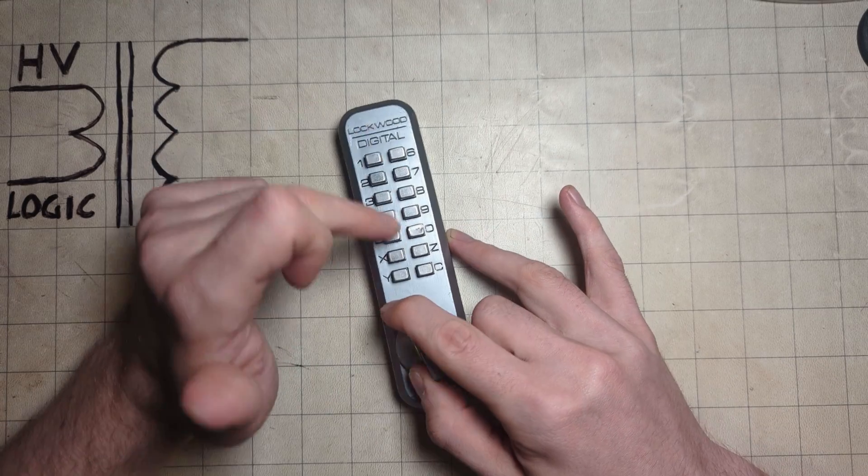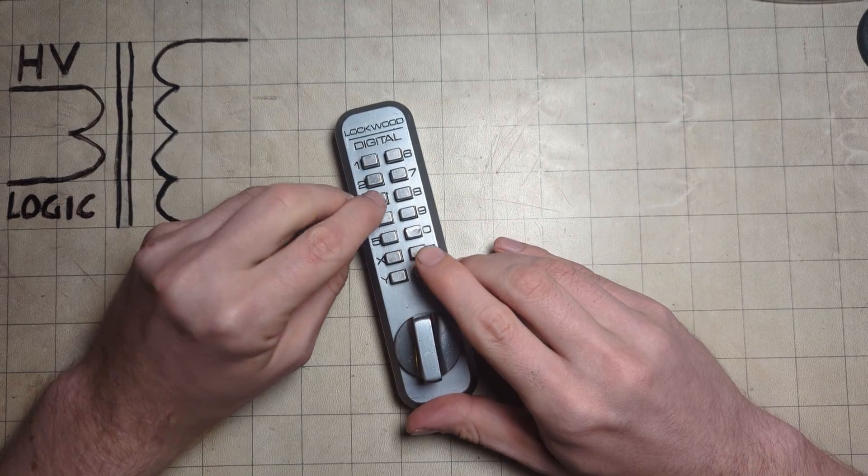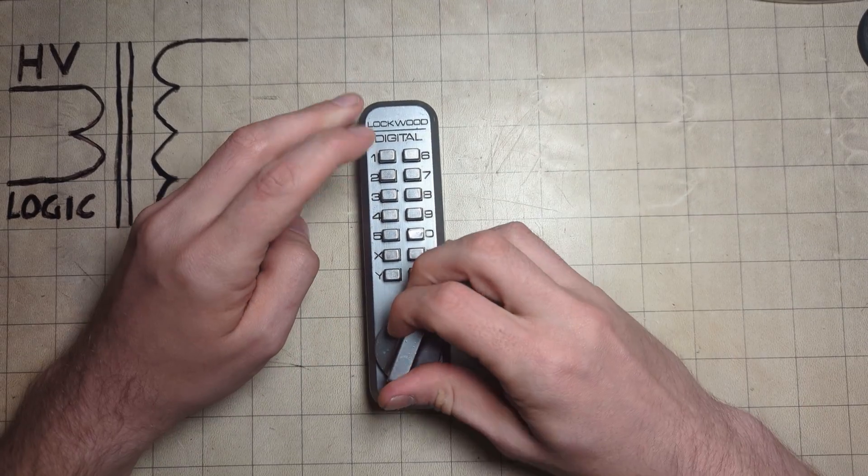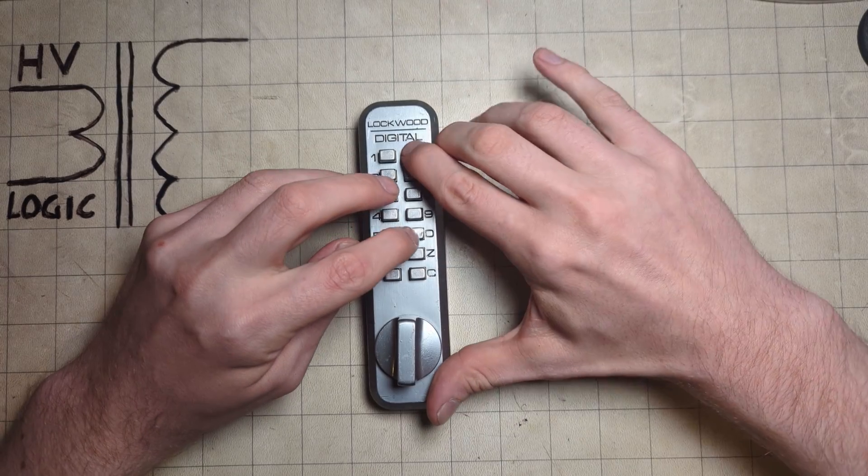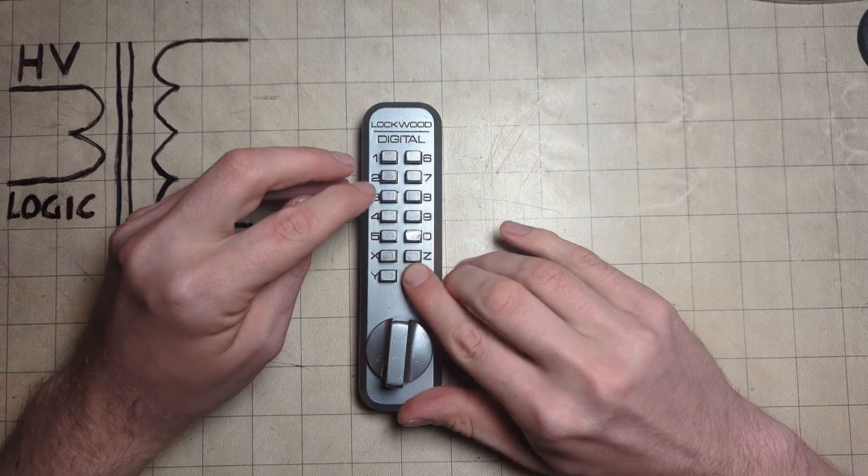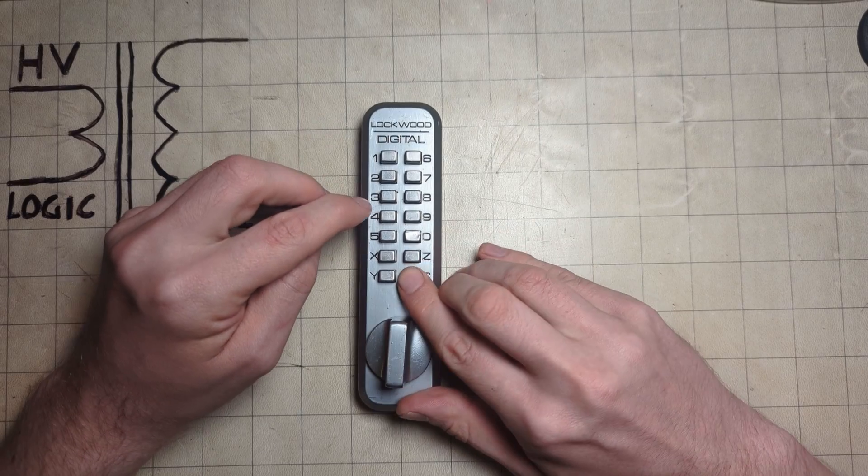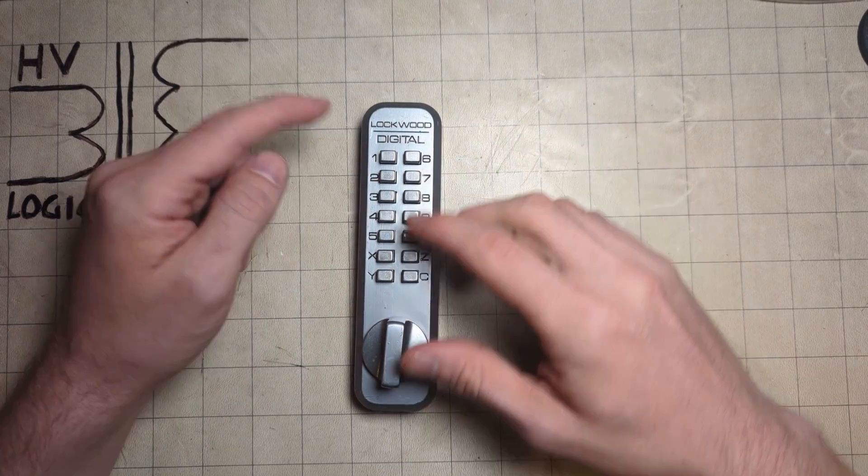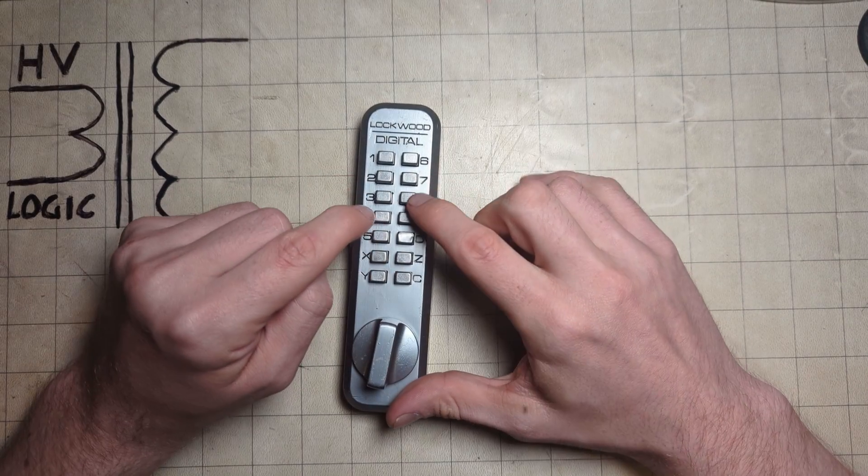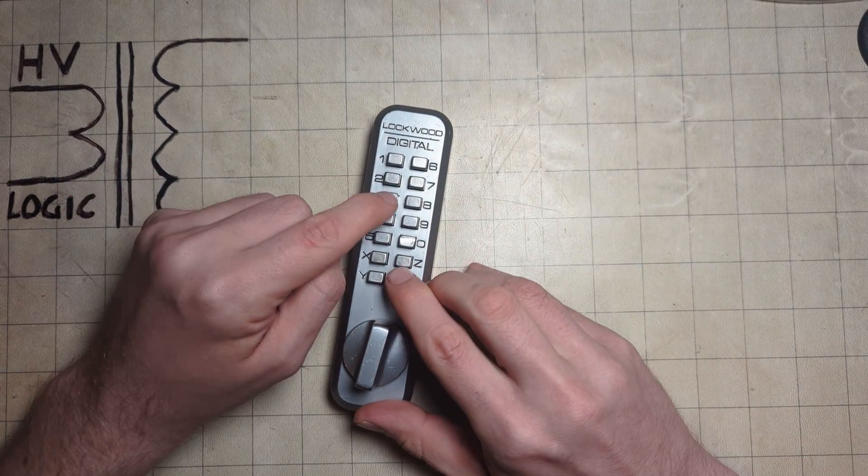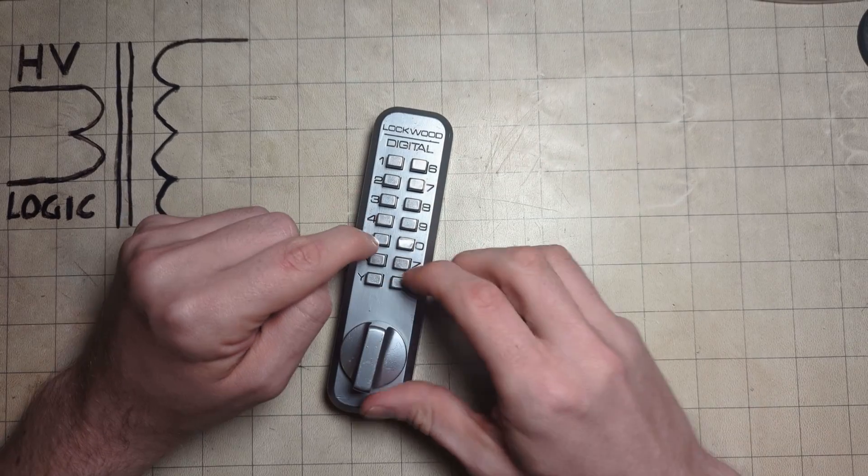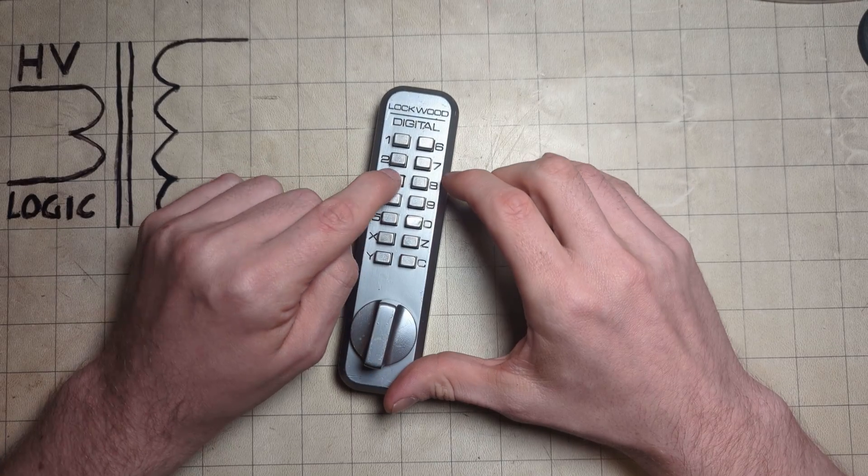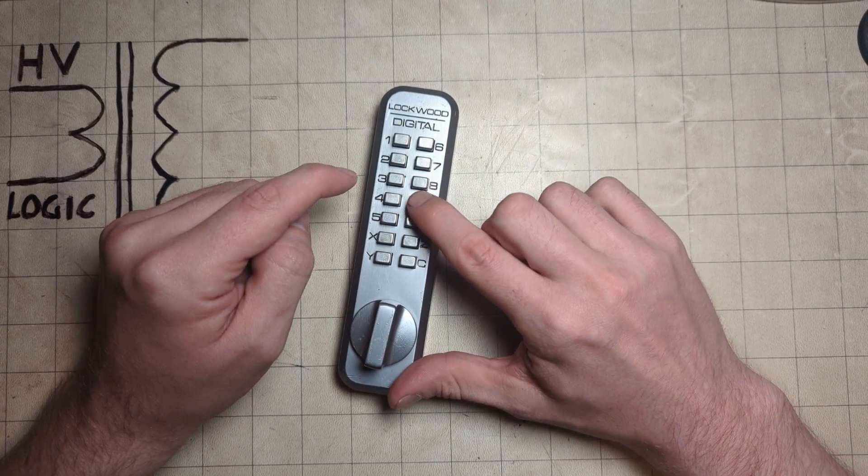Nope. Six and seven - no, that wasn't it. So we'll reset. Three, five, six, eight. Nope. Three, five, six, nine. Nope. Three, five, six, zero. Nope. Three, five, six, zed. Nope. Three, five, seven, eight. We've already done seven, six. Three, five, seven, nine. No. Three, five, seven, zero. No. Three, five, seven, zed. No. Three, five, eight, nine. Open!